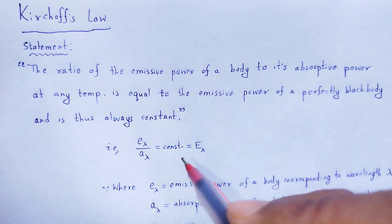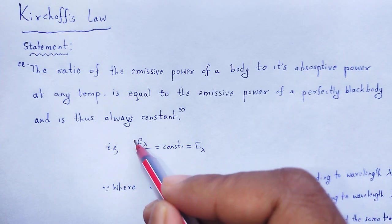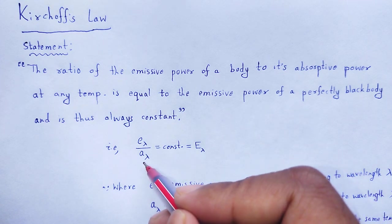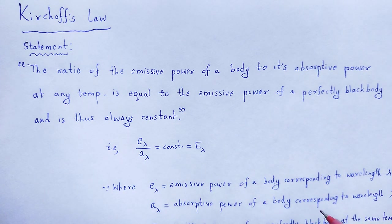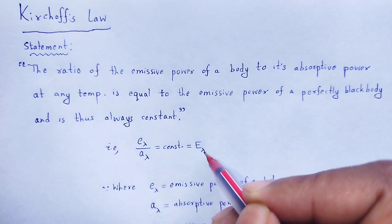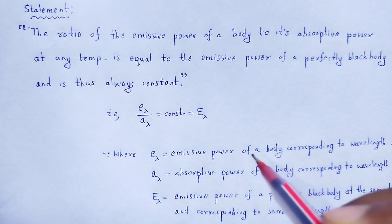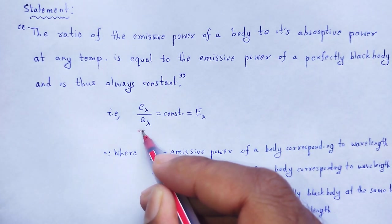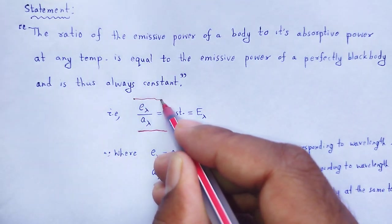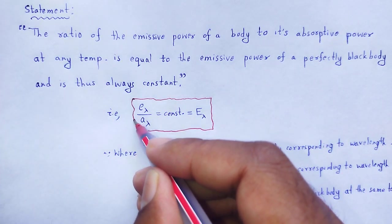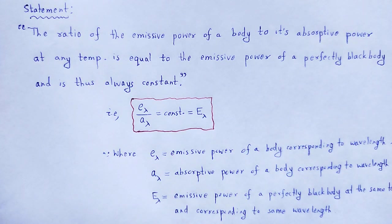E_lambda is the emissive power of a body corresponding to wavelength lambda. A_lambda is the absorptive power of a body corresponding to wavelength lambda. And capital E_lambda is the emissive power of a perfectly black body at the same temperature and corresponding to the same wavelength.